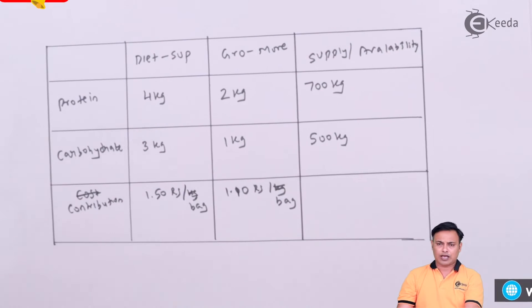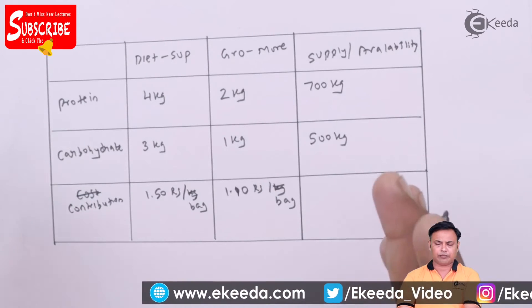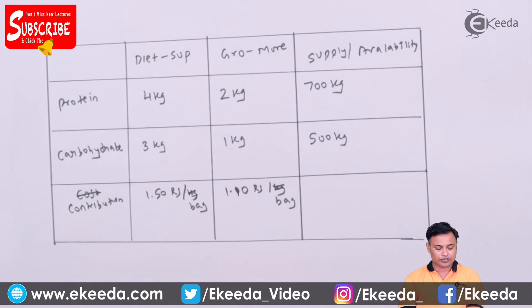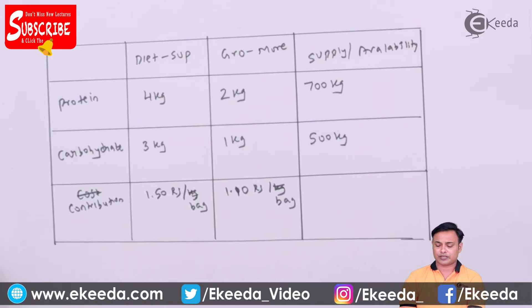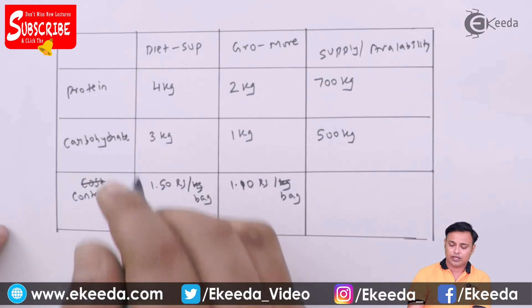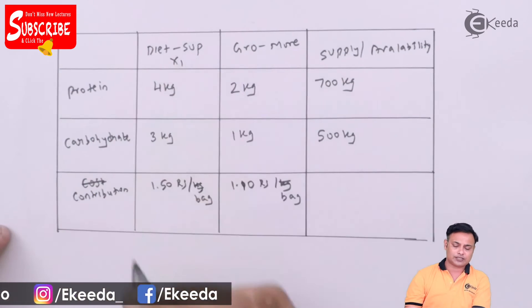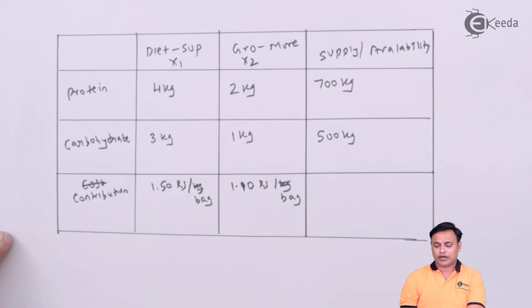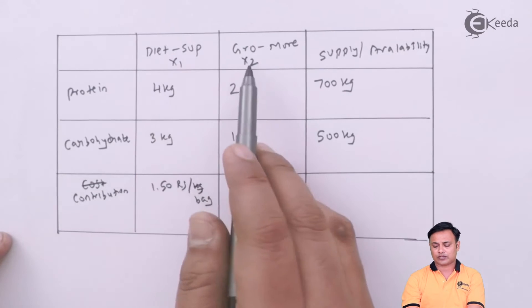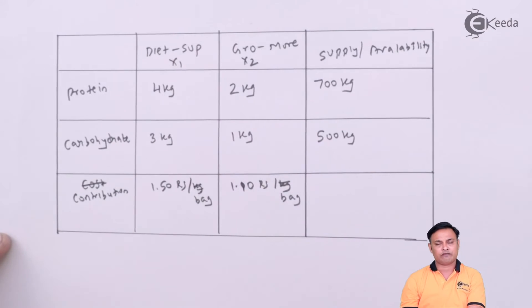So we have the contribution given readily in the problem, we do not need to calculate it. And now I am complete with the table which gives me the complete information from the question. Nothing has been missed out as such and now we need to formulate this as a linear problem. We will first make the assumption that we are making x1 bags of Diet-Sup and x2 bags of Gro-More.